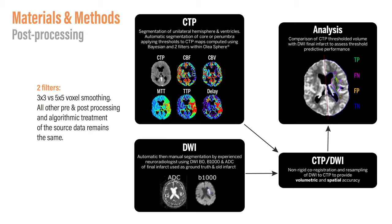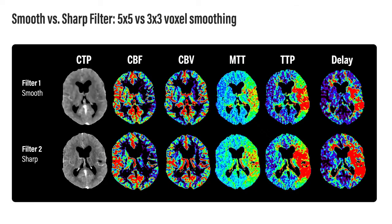This slide summarizes the post-processing methods used in this study. The test imaging — CT perfusion — and the ground truth — diffusion-weighted imaging — underwent automatic or manual segmentation of the regions of interest. They were then combined using non-rigid coregistration and resampling to provide both a volumetric and spatial accuracy. This then underwent a per-voxel statistical analysis. Each voxel was tagged as true positive, true negative, false positive, or false negative. Two different filters were utilized: smooth filter with 5x5 voxel smoothing, and sharp filter with 3x3 voxel smoothing.